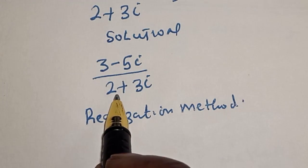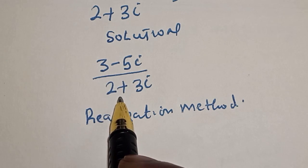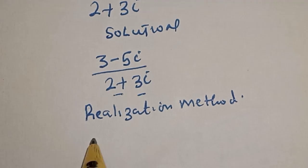Then, that is, we are going to multiply the numerator and denominator by the conjugate of this denominator.